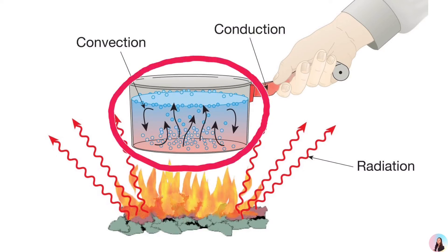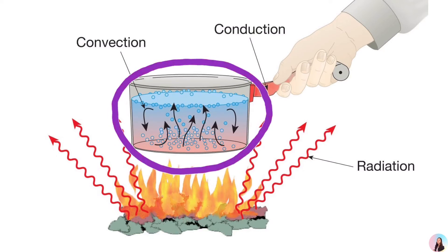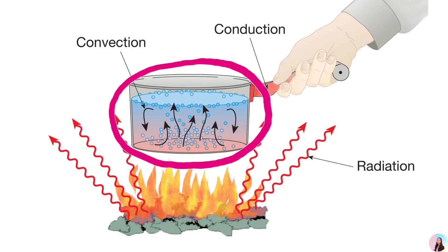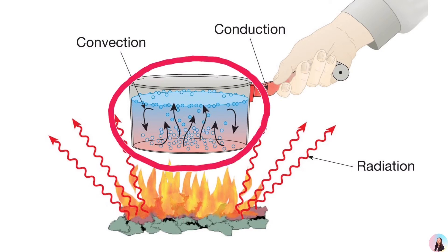This less dense water rises, while the cooler, denser water sinks. This movement creates convection currents. Energy is transferred by this current from the warmer to the cooler part of the liquid.